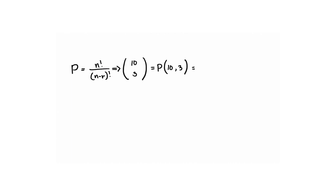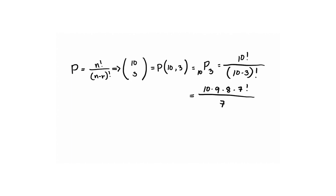From the 10 chosen entries, three of them will be ranked in order as first, second, or third. P(10,3) = 10! / (10 - 3)! = 10 × 9 × 8 × 7! / 7! = 10 × 9 × 8 = 720. Therefore, there are 720 ways that these entries can be ranked.